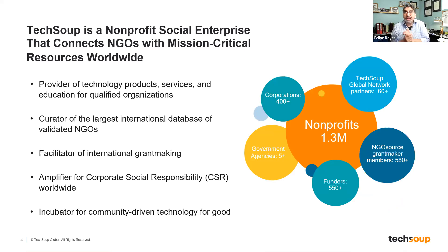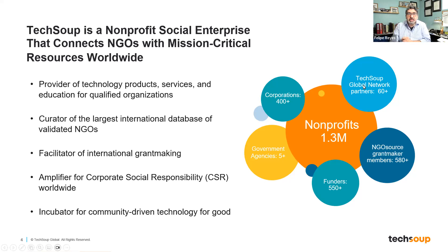About TechSoup: TechSoup is a nonprofit social enterprise that connects NGOs with mission-critical resources worldwide. We operate in 200 countries — the exceptions are the usual suspects, the embargo countries like North Korea and Iran. Sometimes we operate directly, and sometimes through partners called the TechSoup Global Network. We partner with local country partners because they know the local economy much better than we would. We also have corporate partners, straddling two different worlds — supporting nonprofit organizations while also working with the corporate social responsibility departments and philanthropic arms of corporations like Microsoft, DocuSign, and Google.